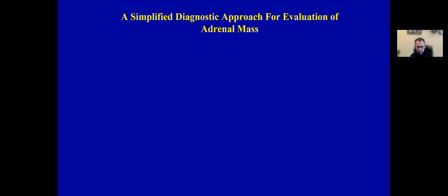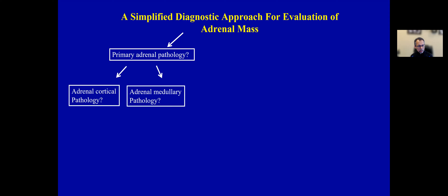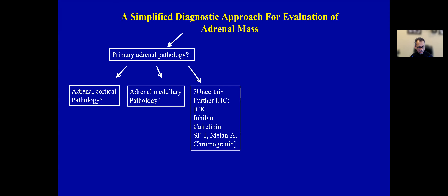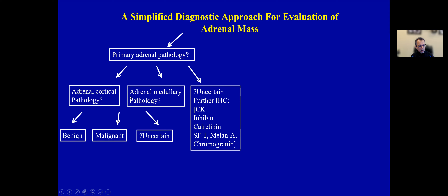Here is my simplified diagnostic approach. The first important question is: am I dealing with a primary adrenal pathology? If yes, am I dealing with adrenal cortical or adrenal medullary pathology? If it's not clear, you need further immunohistochemical markers — typically cytokeratin, inhibin, calretinin, SF1, melanin-A, and chromogranin. If dealing with a primary adrenal pathology, determine whether it is benign, malignant, or of uncertain malignant potential. You could also be dealing with other tumors like myelolipoma or adrenal cyst.